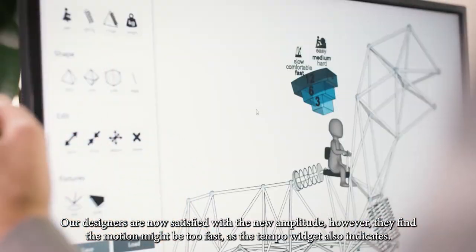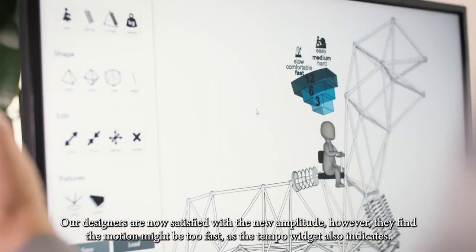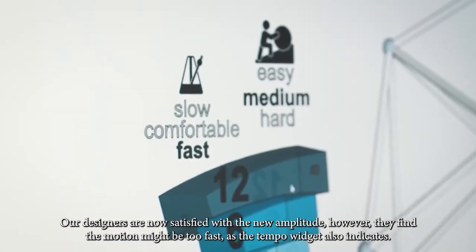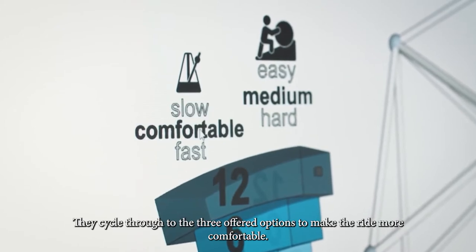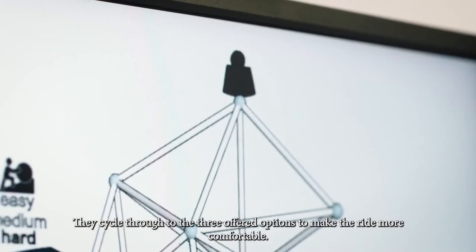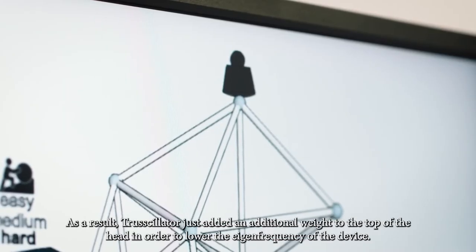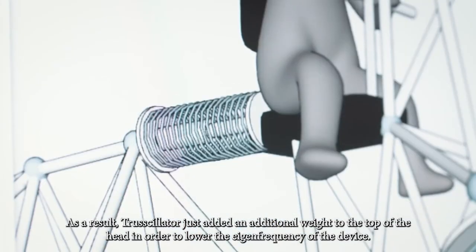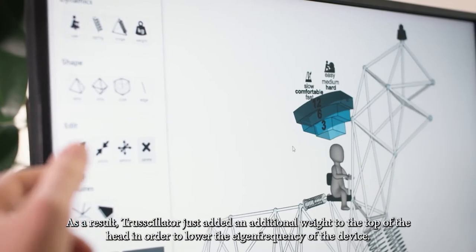However, they find that the motion might be slightly too fast, as the tempo widget also indicates. They cycle through the three offered options to make the ride more comfortable. Trussillator just added an additional weight to the top of the head in order to lower the eigenfrequency of the device.